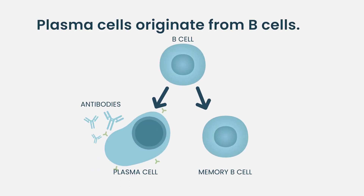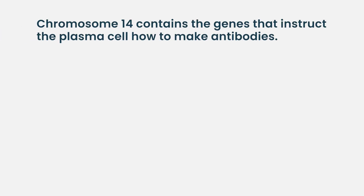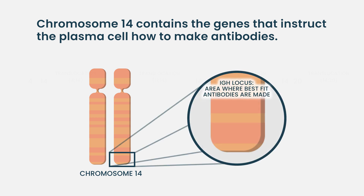When B cells decide to become plasma cells — to become snipers — they need to learn how to make bullets, how to make antibodies. Part of this process involves cutting and pasting of DNA. This cutting and pasting is not random; it has to happen at specific locations. They often involve chromosome 14 because on chromosome 14 we have genes that instruct the B cell to make antibodies. In other words, the genes for the bullets of the immune system are on chromosome 14.